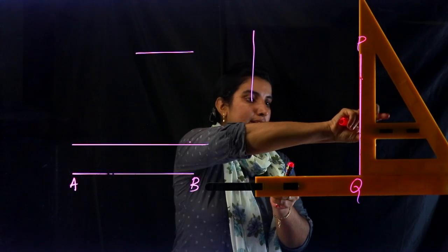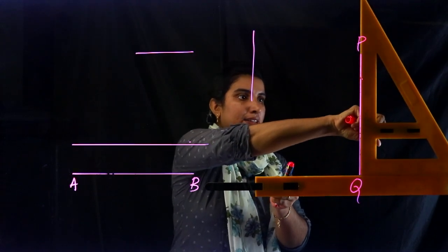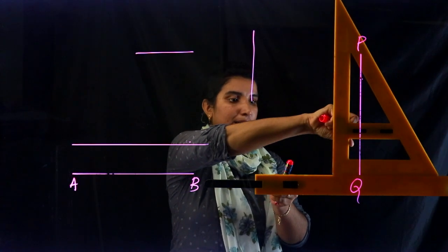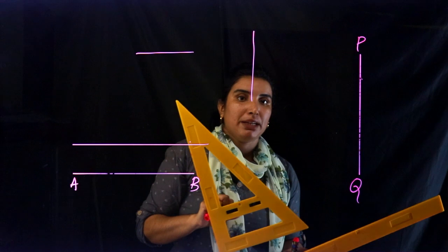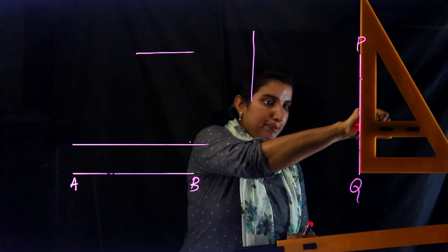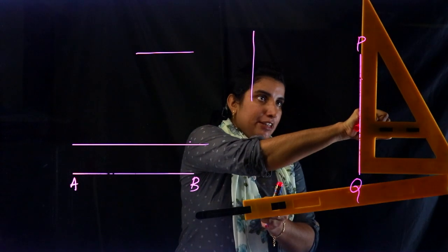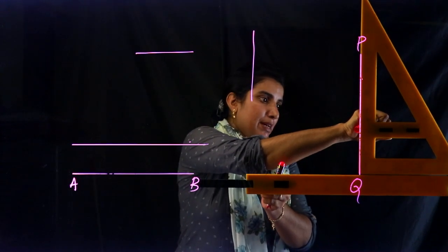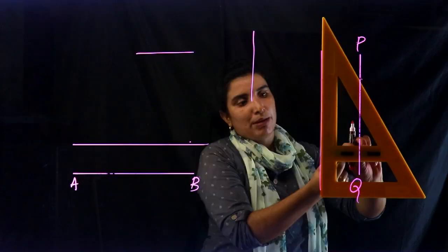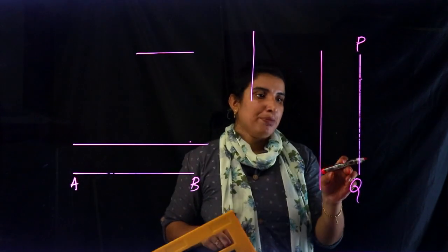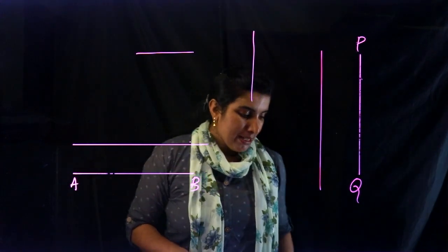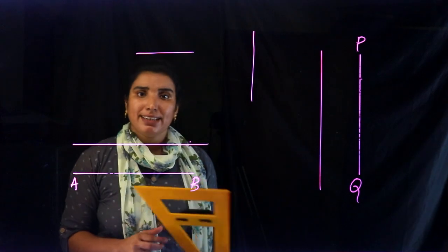Now we have set. We will put a set square here. The technique will be done in the same way, it's a bit straight down. I'll take the parallel lines and draw the parallel lines. Do you see the parallel lines? We'll put the parallel lines here, and we'll be able to pull parallel lines in the same way.